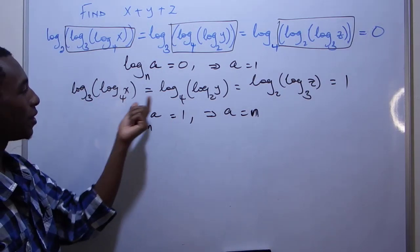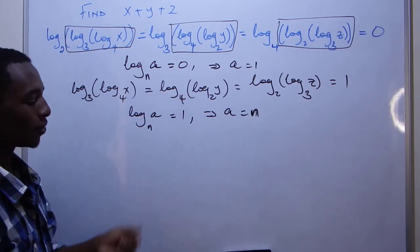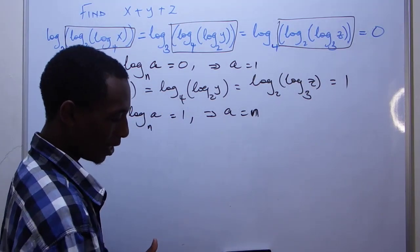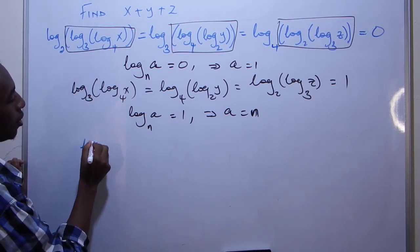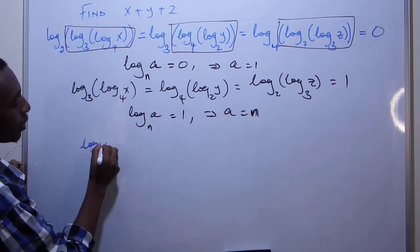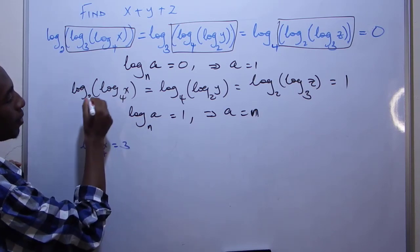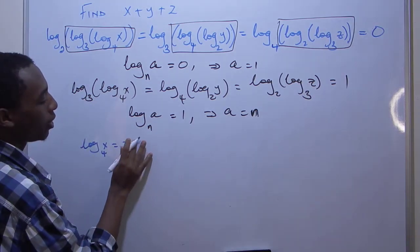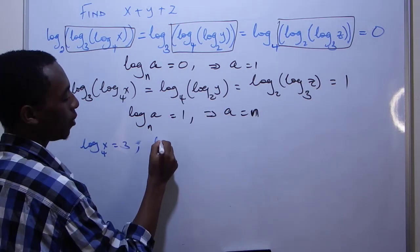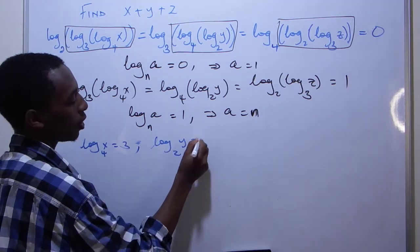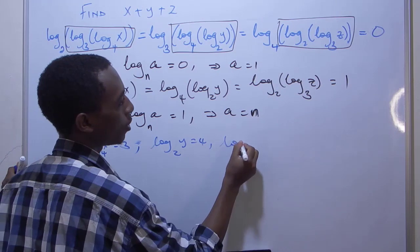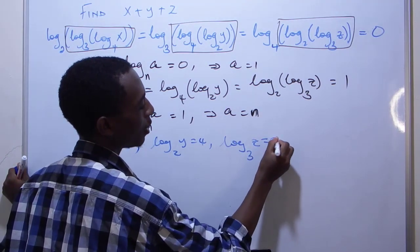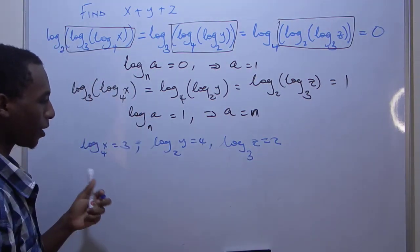So that means each of these arguments is equal to the corresponding base. Let me just do that using another color here. So this means that log four x equals three from here and then, okay,